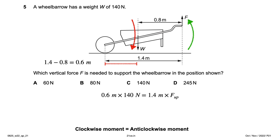So: 0.6 m × 140 N = 1.4 m × F. Rearranging for F gives 60 newtons, so option A is the right answer.